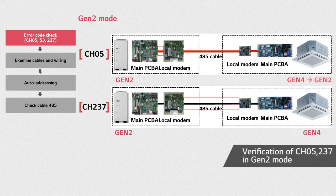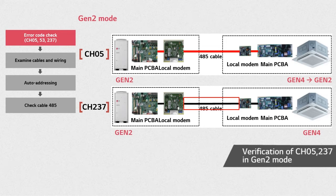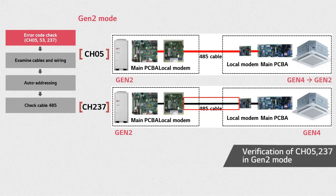Let's discuss CH237 in Gen2 mode of the ODU. Sometimes, when the IDU cannot communicate with the ODU since power reset time, the IDU remains in Gen4 mode even though the ODU is set to Gen2. In this case, CH237 will occur.